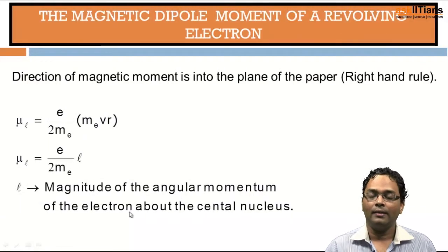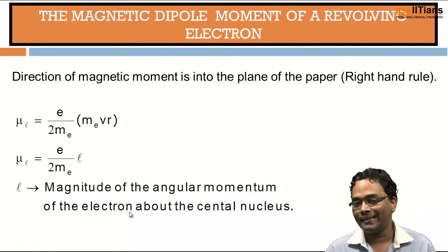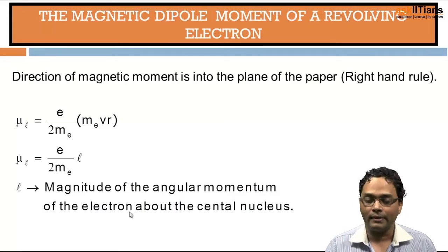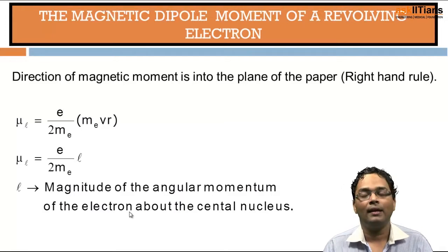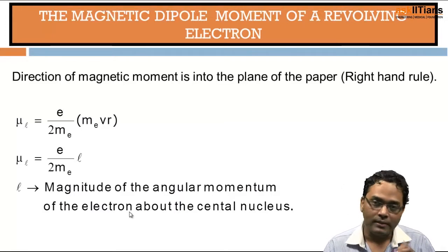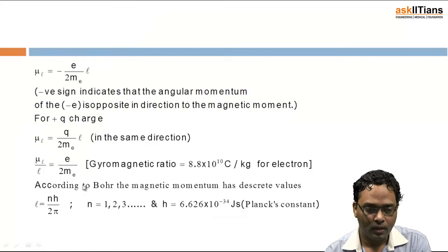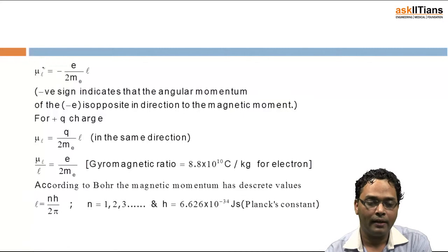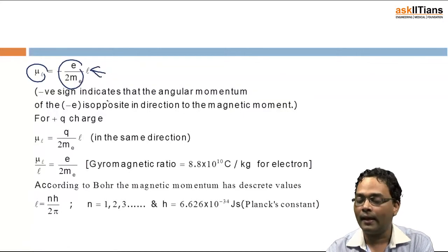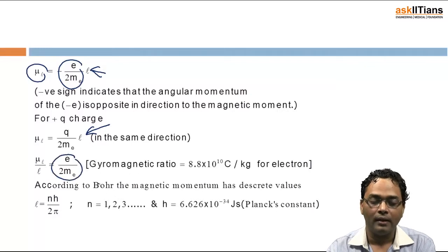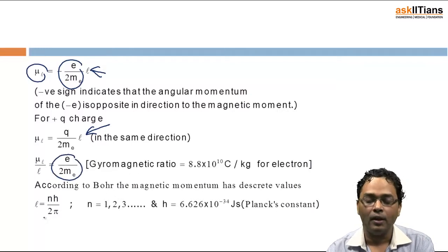The direction of the magnetic moment is given by the right-hand thumb rule. Simplifying further: m·v·r is nothing but the angular momentum L. So the magnetic moment can be written as μ_L = (e/2m) times the angular momentum. The ratio e/2m has special significance — it appears in the gyromagnetic ratio.